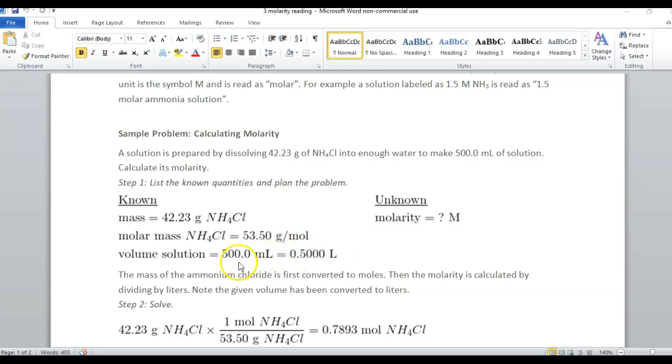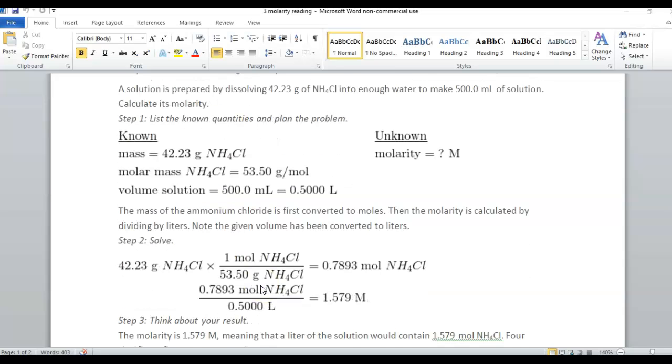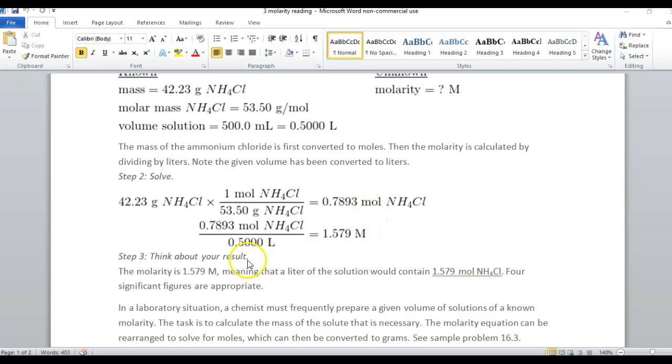Also take a look at how many significant digits we have in our problem. Each of them has four, so our answer is going to be rounded to four. They set up the crisscross, canceling out grams on top, giving you moles. Then you take moles, divide it by the volume, and you get your molarity concentration.